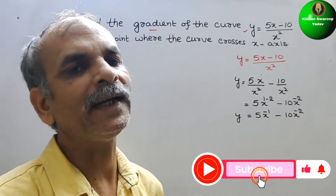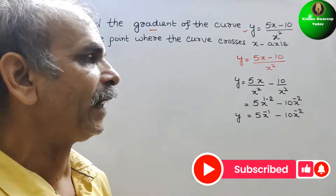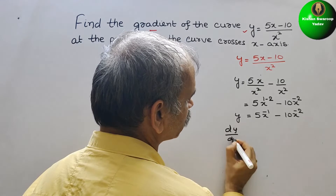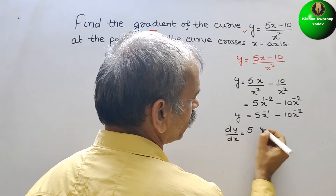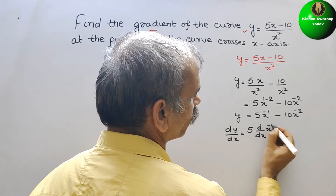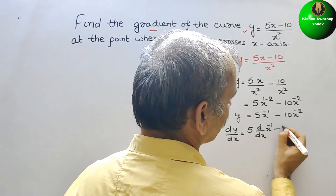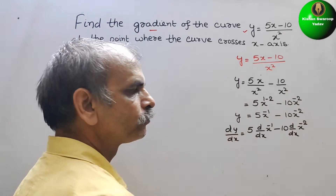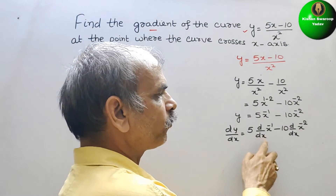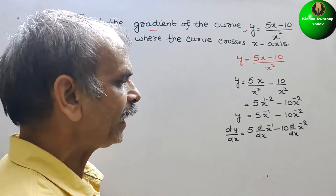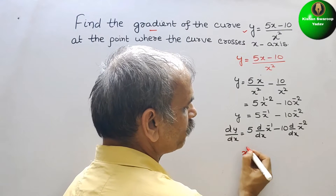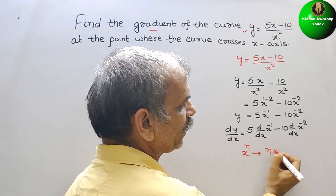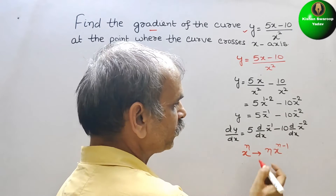Now we have to go for dy by dx, that means we have to differentiate. We will go for our power function. That is: if the term is x to the power of n, and if you differentiate, we will get n times x to the power of n minus 1. That only we have to do here.